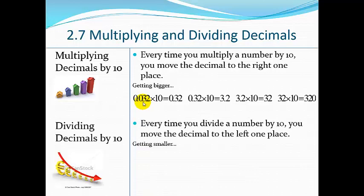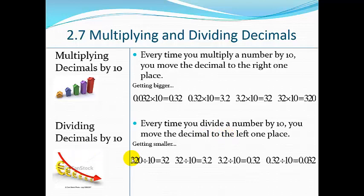And then it's going to be the same. If I'm dividing, it's going to be the opposite. So every time you divide a number by 10, you move the decimal to the left one place. So it gets smaller. So 320 divided by 10. Remember, your decimal place is always right here to the right.